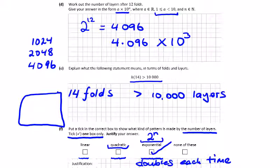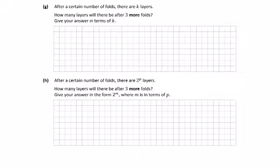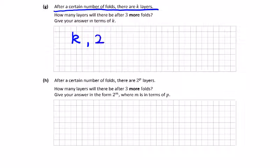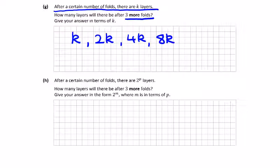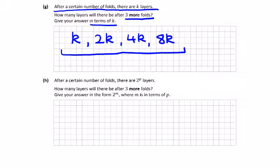There are 8 double parts — a, b, c, d, e, f, g, h — so 40 marks for this question overall. Part g: after a certain number of folds there are k layers. The next fold doubles it to 2k; double again to get 4k; double again to get 8k. After three more folds the answer in terms of k is 8k.